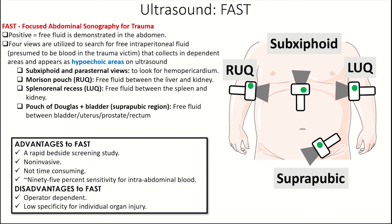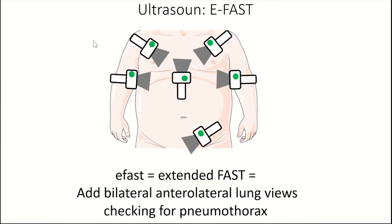In the splenorenal recess in the left upper quadrant, we're looking for free fluid between the spleen and kidney. In the pouch of Douglas plus the suprapubic region, we're looking for free fluid between the bladder, uterus, prostate, or rectum. The advantages of FAST are that it's rapid, non-invasive, not time-consuming, and about 95% sensitive for intra-abdominal blood. The disadvantage is it's operator-dependent and has low specificity for individual organ injury — you don't know where the blood is coming from, just that it's there. The EFAST adds bilateral anterolateral lung views to check for pneumothorax or hemothorax.